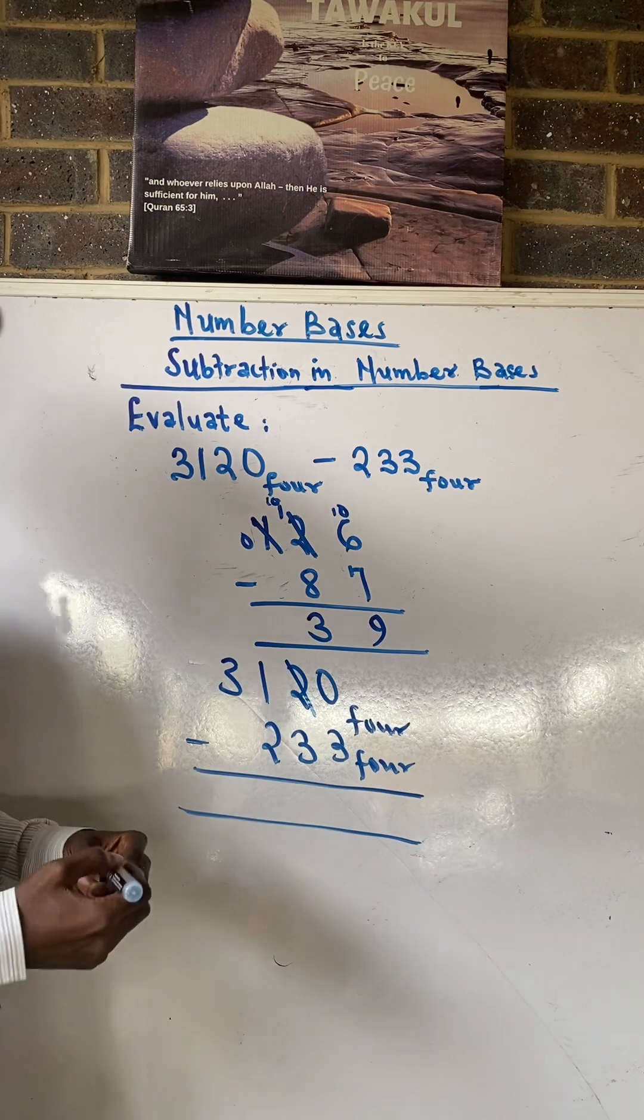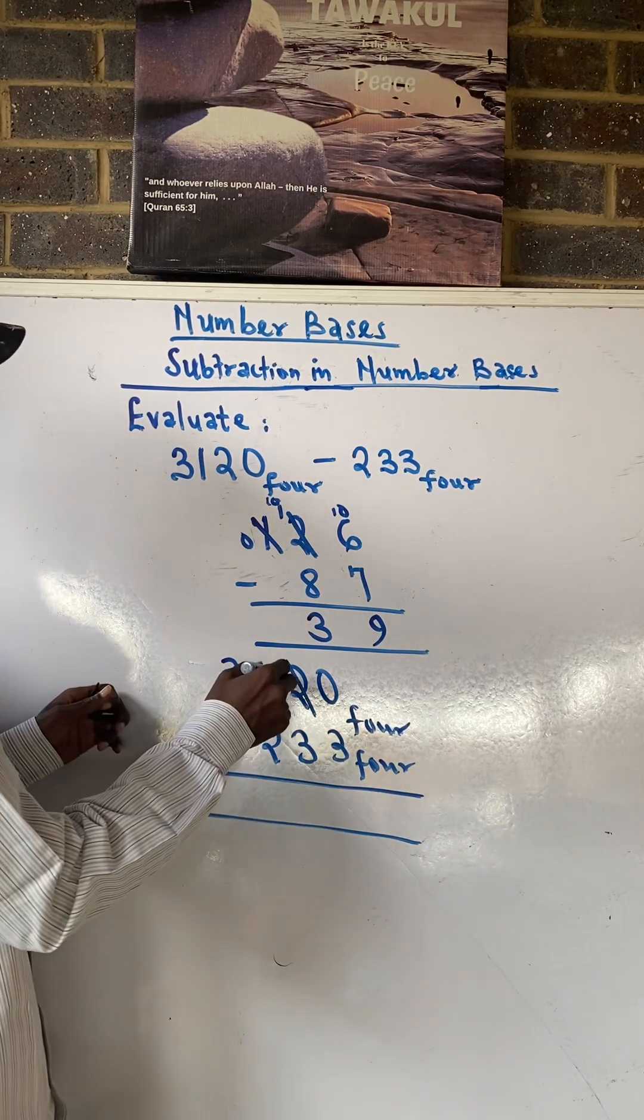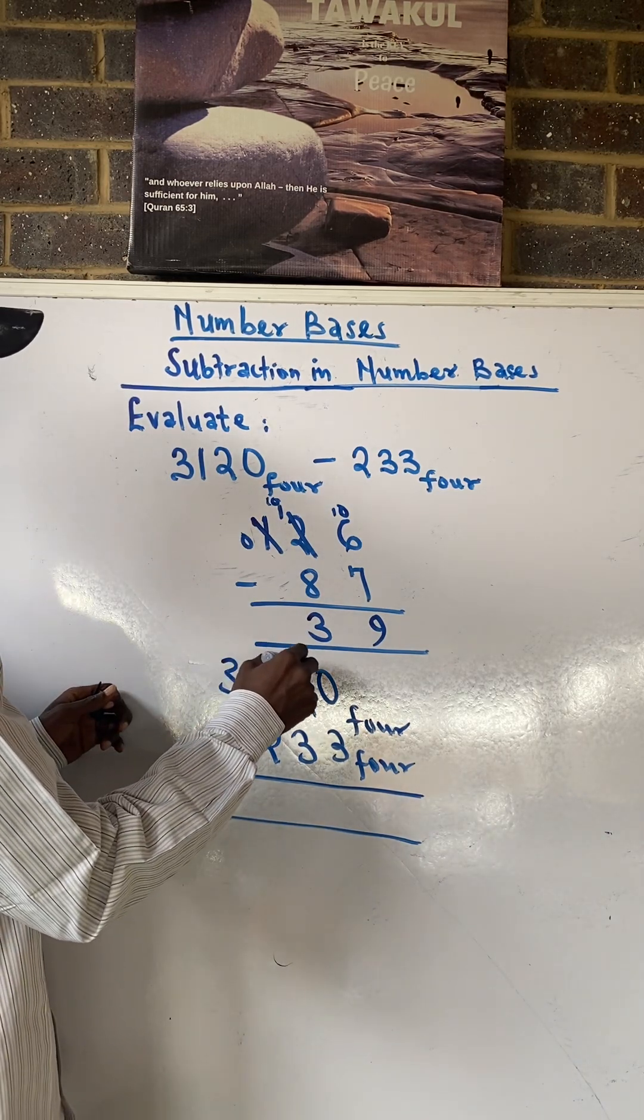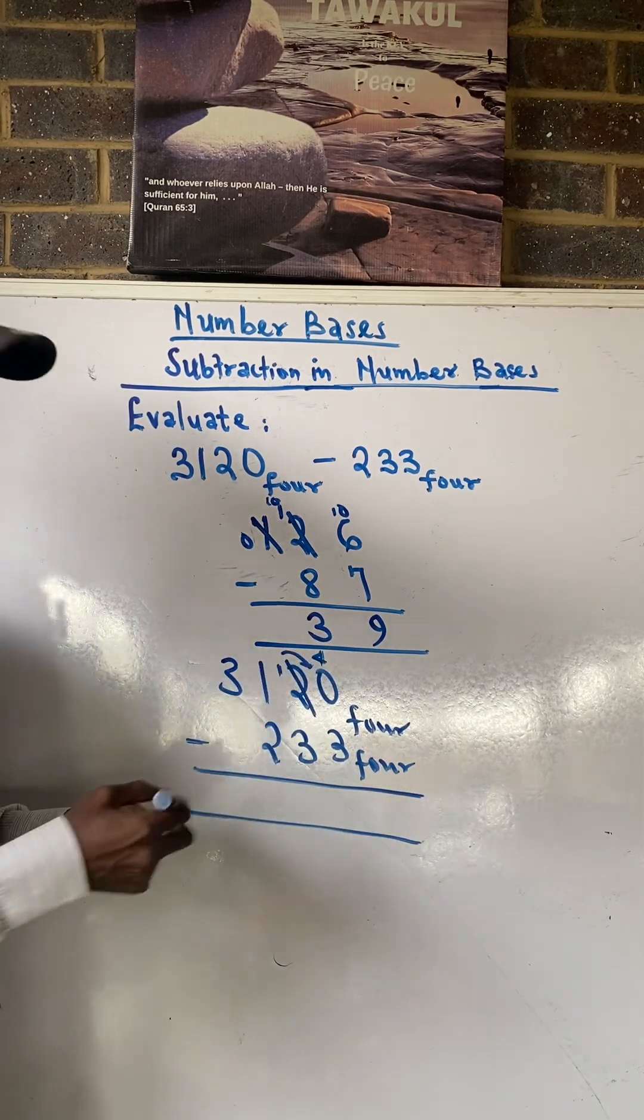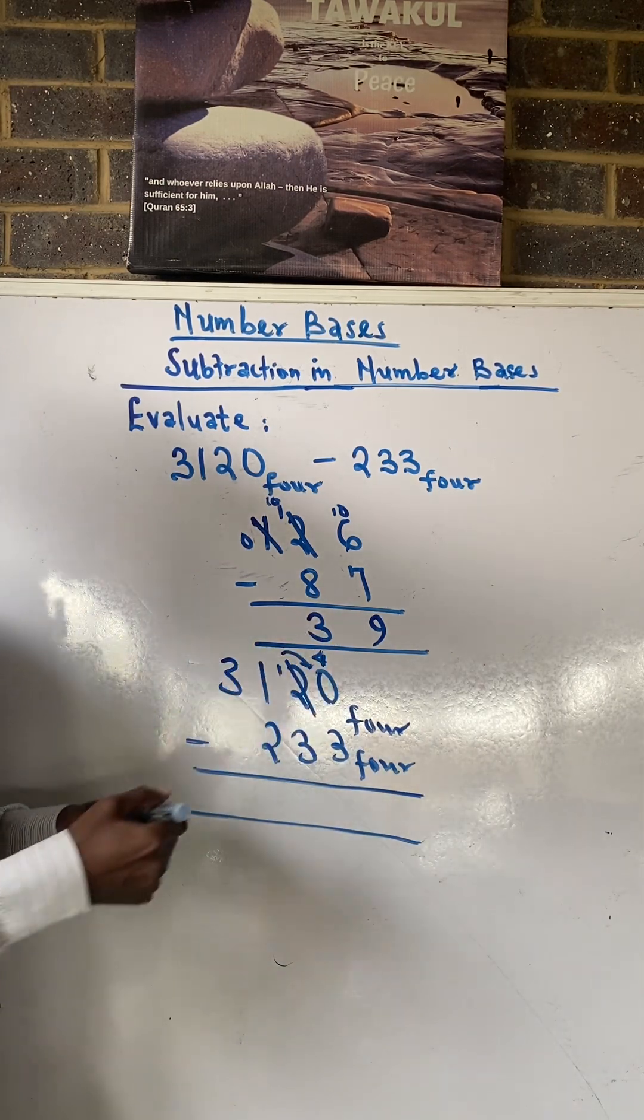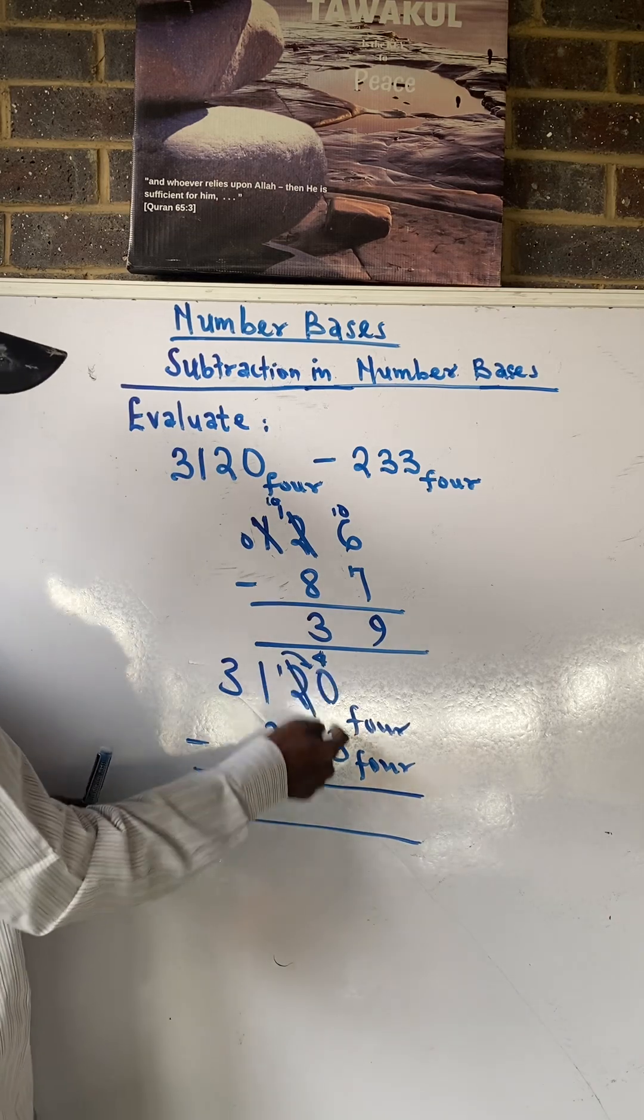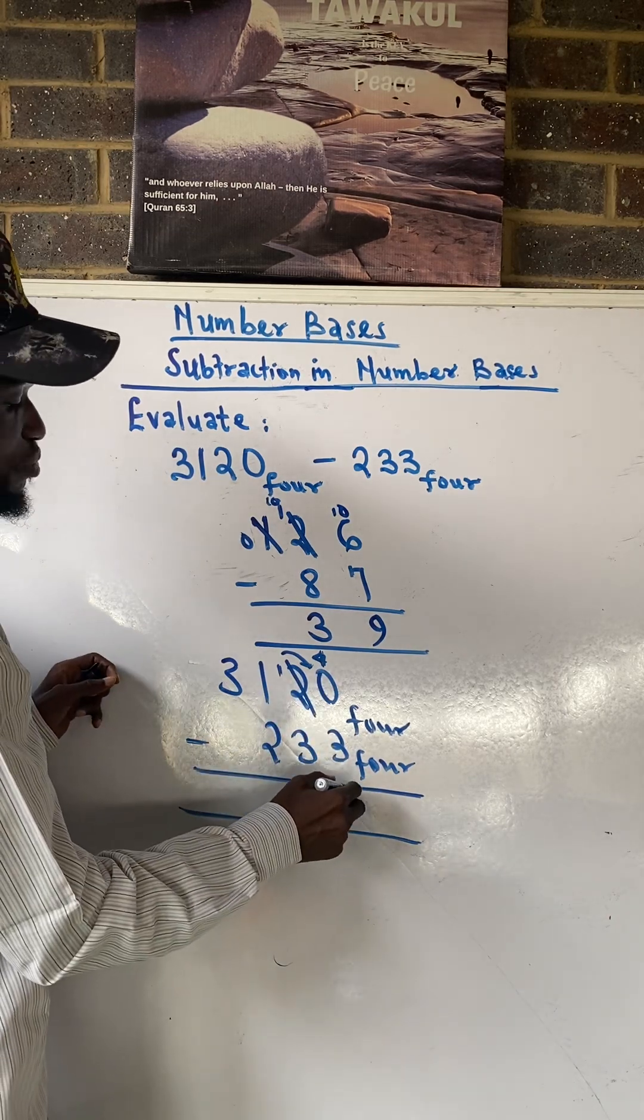Now don't forget I said if you are dealing in base four you borrow four. So I will borrow from this, so this remains 1. By the time I throw the one that I borrow from this it becomes 4 here. So 4 plus 0 will give me 4. 4 minus 3 is going to give me 1.